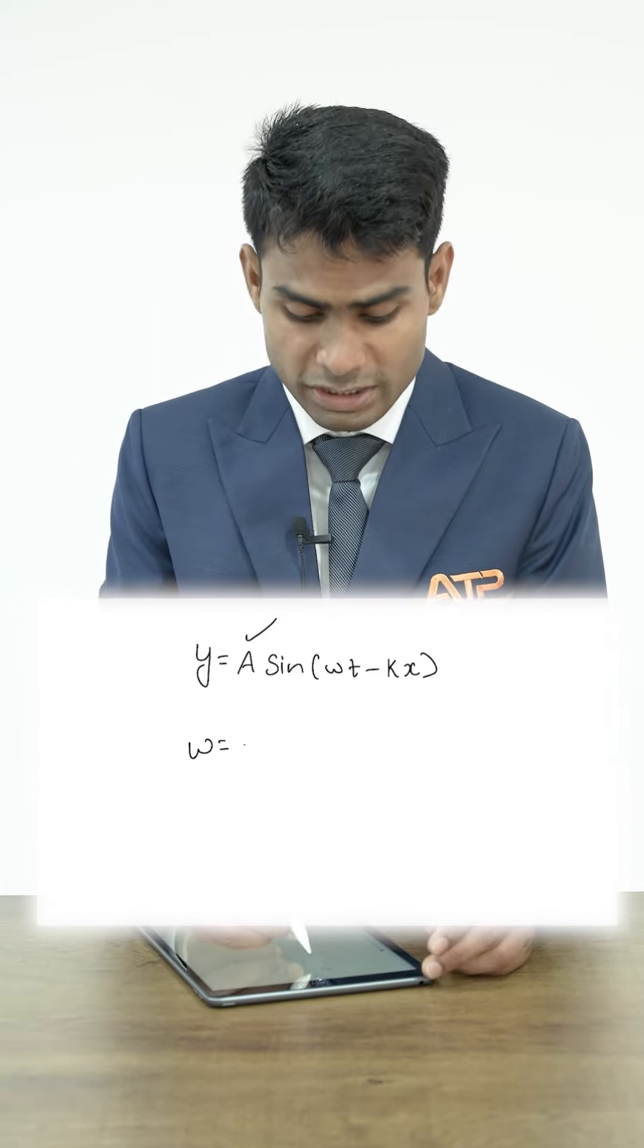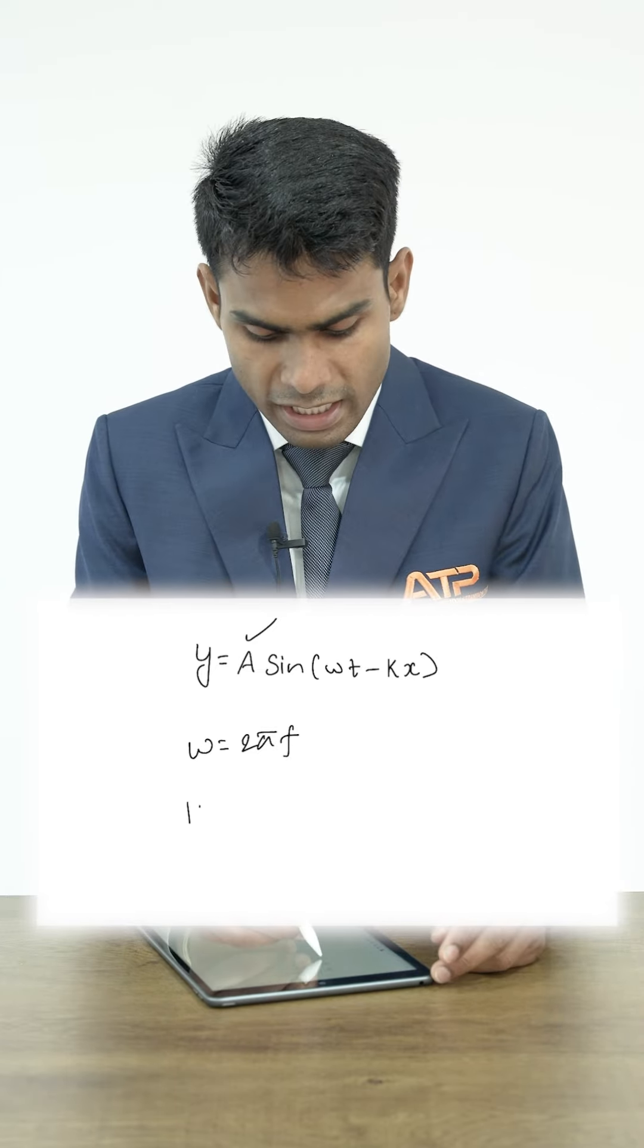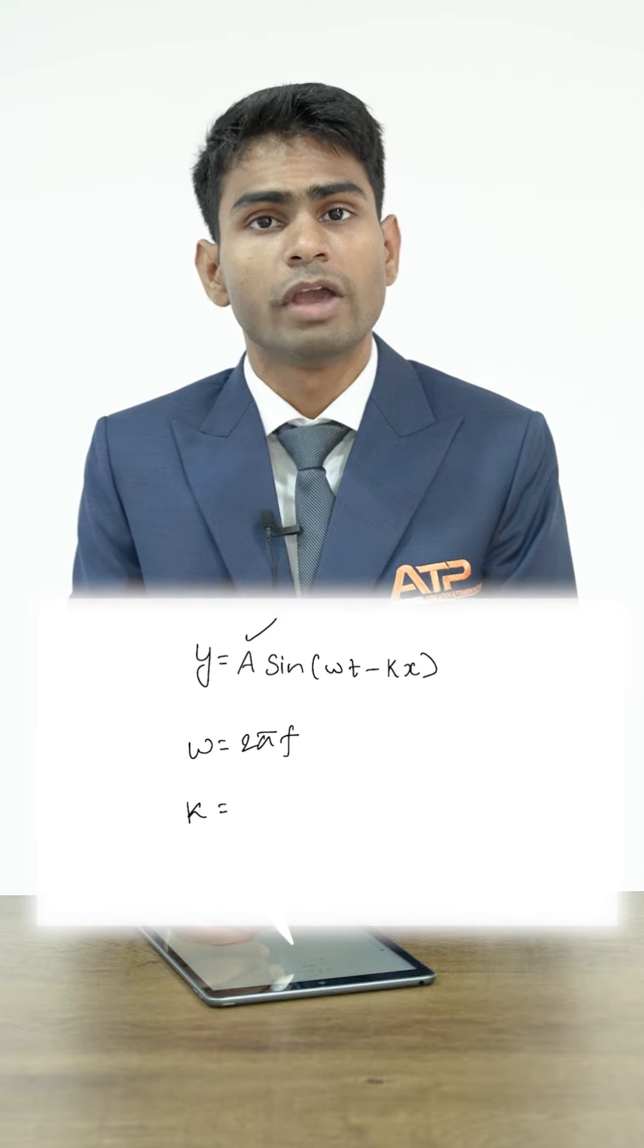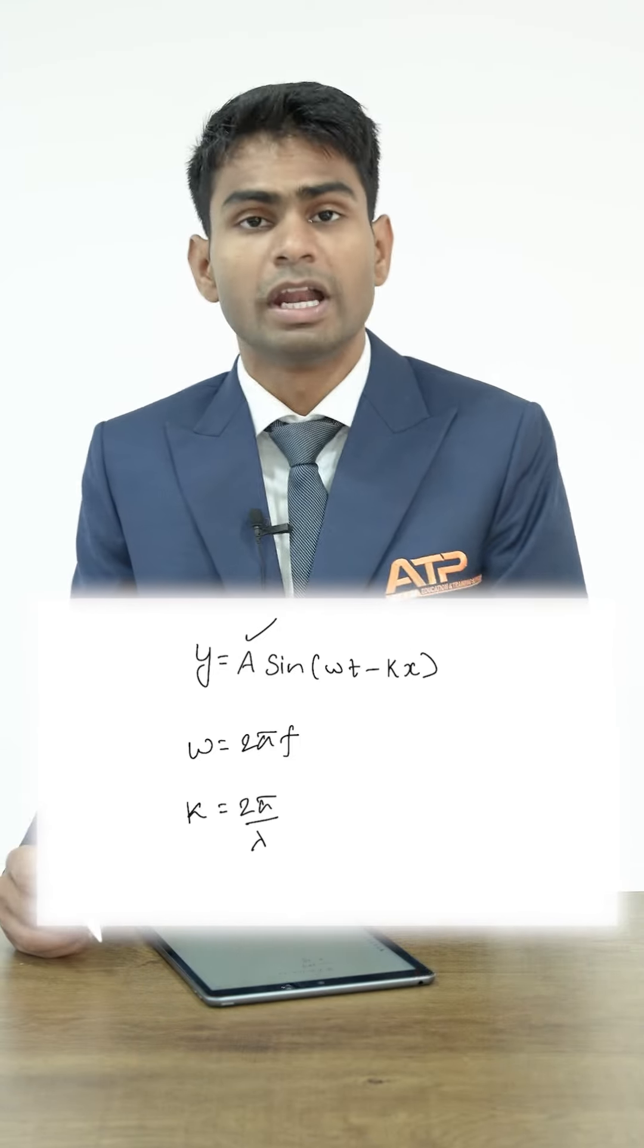The expression is given by 2 pi f where f is the frequency of the particle, and k is known as the angular wave number which is given by the expression 2 pi by lambda where lambda is the wavelength of the wave.